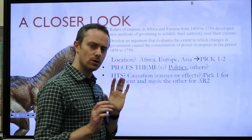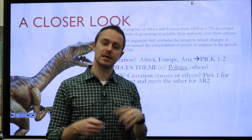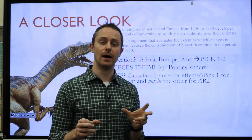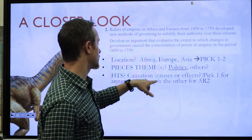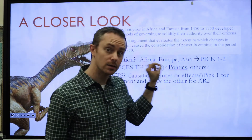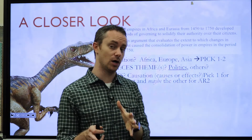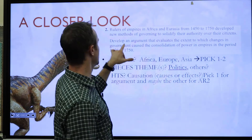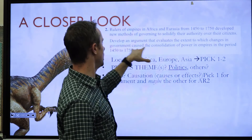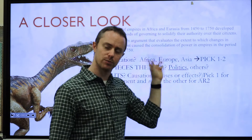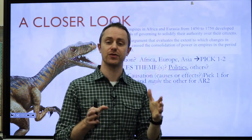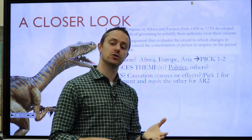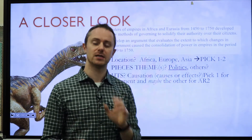Next, historical thinking skill. Causation is probably the most logical for this particular prompt. The College Board is continually trying to make it more broad, so you could frame your argument with any of the three historical thinking skills. In this case, when you see the word 'caused' in the prompt, it should clue you into the idea that this is likely going to be a causation one. You might also want to incorporate a little bit of comparison, because we're talking about evaluating the extent to which changes in government caused consolidation — that's multiple changes, possibly multiple states, so there's an integrated element of comparison already in there.